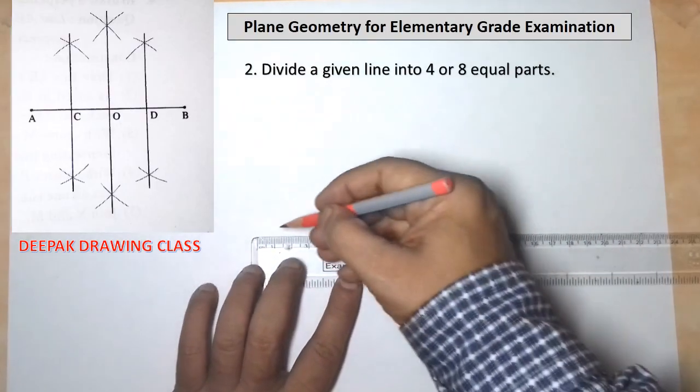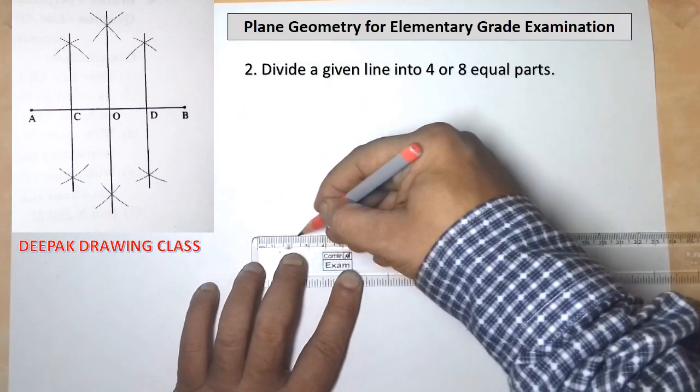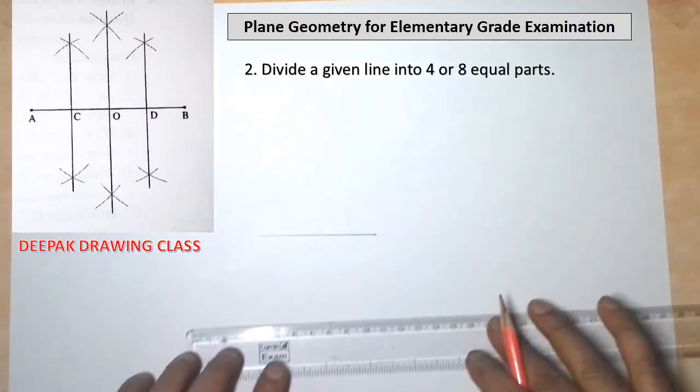So first of all, draw a line AB of 7 cm long.